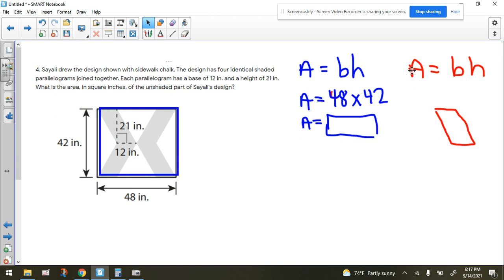Now we also need to find the area of one of the parallelograms, and that's also going to be base times height. And what's the base? The base is 12. What's the height? It's 21. See the dotted line perpendicular?